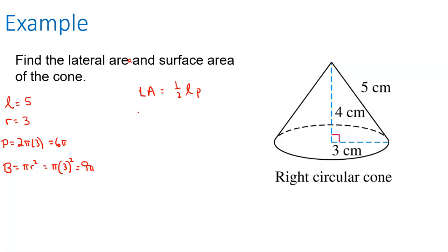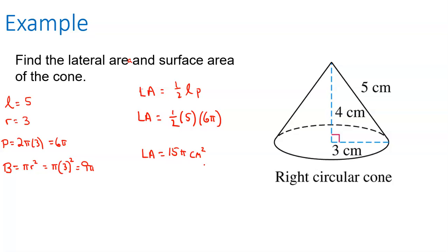Now let's throw the numbers into the formula. Lateral area equals one-half the slant height times the perimeter of the base: one-half times 5 times 6 pi. Half of 6 is 3; 3 times 5 is 15. So my lateral area is 15 pi square centimeters.